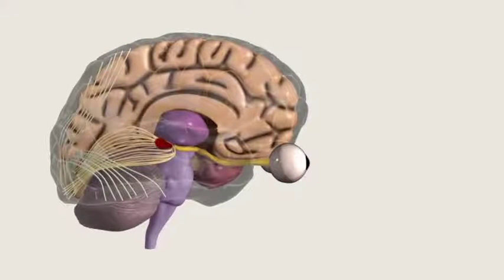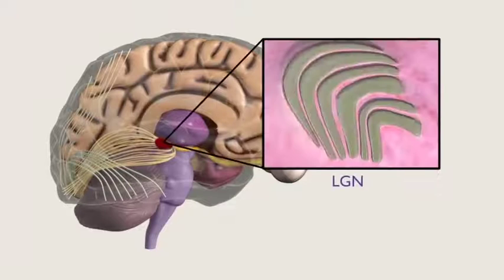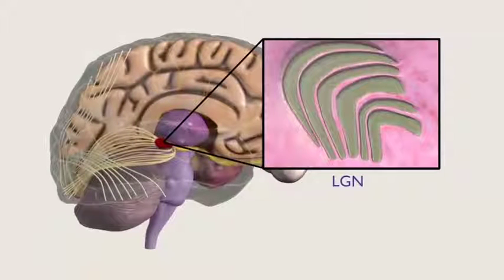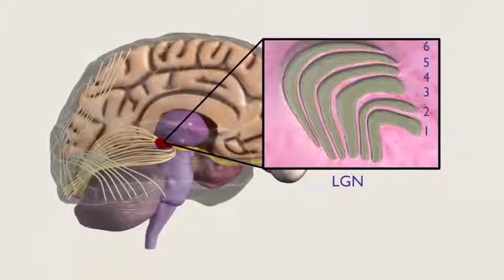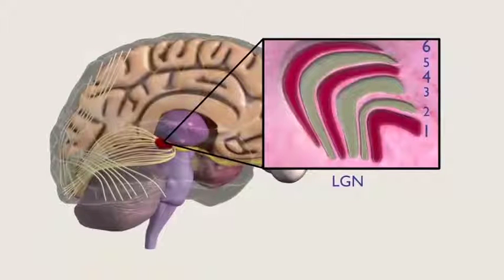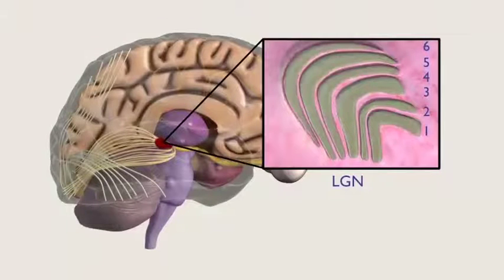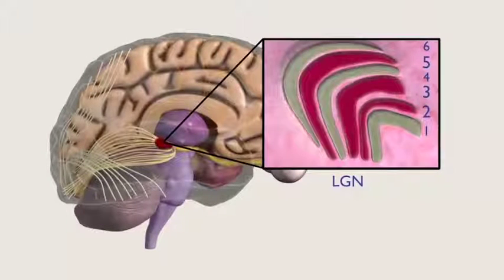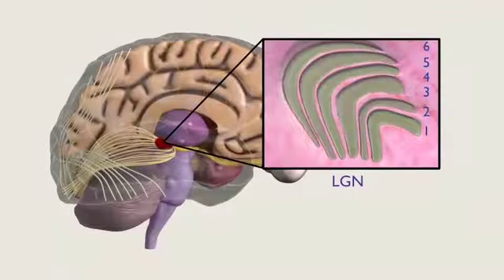The lateral geniculate nucleus or LGN is the area of the thalamus that processes visual information. The LGN has six layers, with alternating input from the left and right eyes. Input from each eye is kept separate. Layers 1, 4, and 6 of the LGN receive input from the contralateral eye. Layers 2, 3, and 5 receive input from the ipsilateral eye.